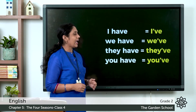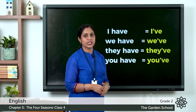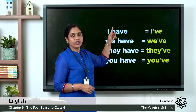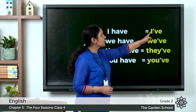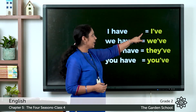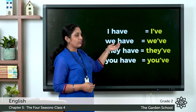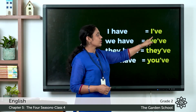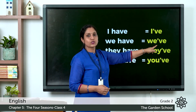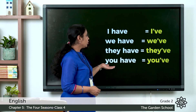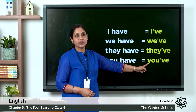I have is written as I've — I apostrophe V-E — where the letters H-A are missing. We have becomes we've, they have becomes they've, and you have becomes you've. In all these, the letters H-A are missing.